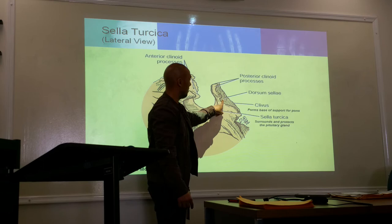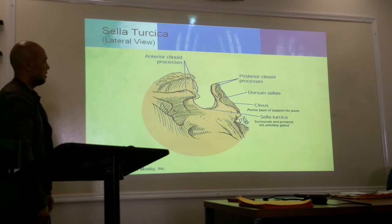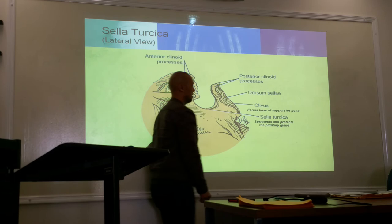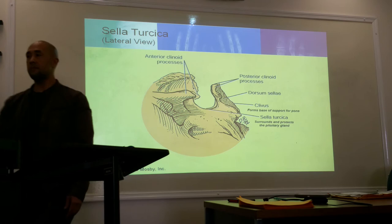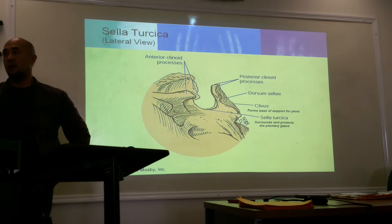The clivus, right below the dorsum sellae, forms the base of support for the pons and is where you'll find the basilar artery, a major artery feeding the brain. The sella turcica is an important landmark used in assessing proper positioning of skull x-rays.